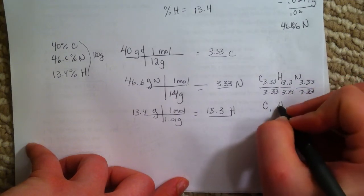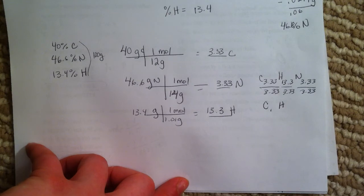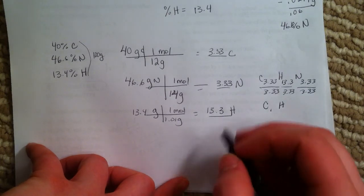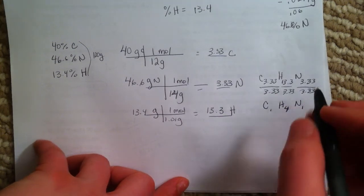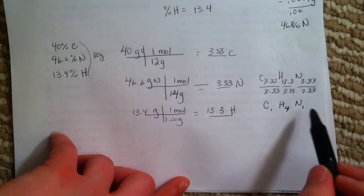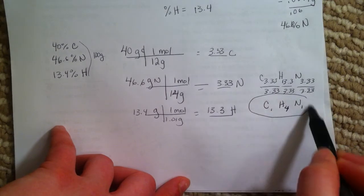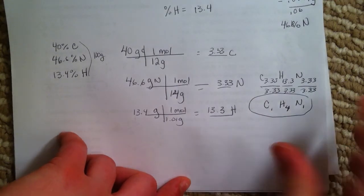We're going to get C 1, H 4, and N 1. That would be the empirical formula. Start with grams, go to moles, divide by smallest, multiply to a whole. But we already have wholes, so we're going to keep it like that.